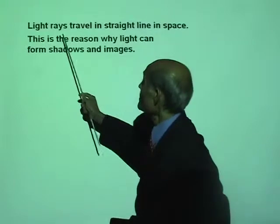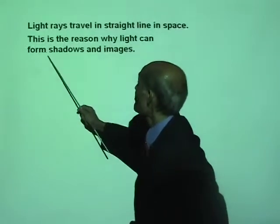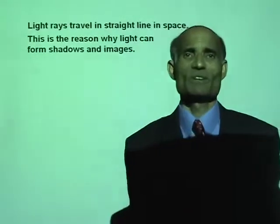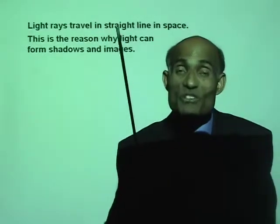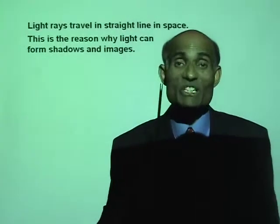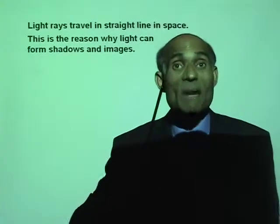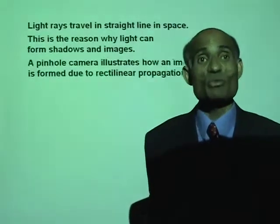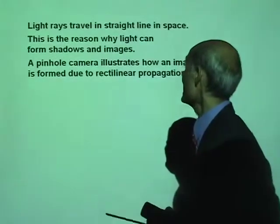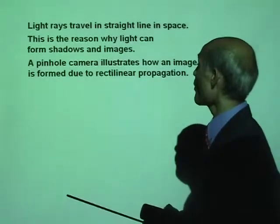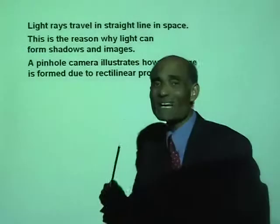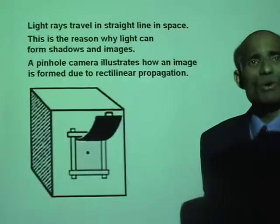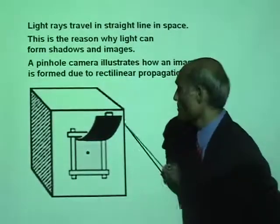The reason why light can form shadows and images — what is an image? You are able to take pictures on a camera because light can form your image on a screen. A pinhole camera illustrates how an image is formed due to the rectilinear propagation. If you make a box and make a hole in it.